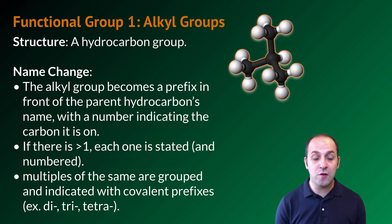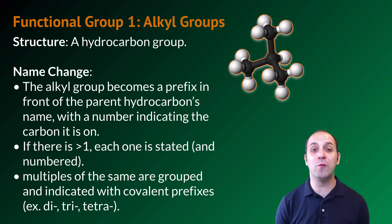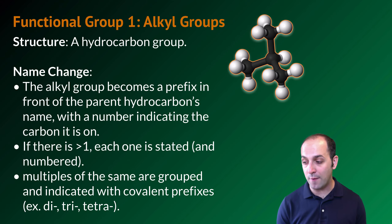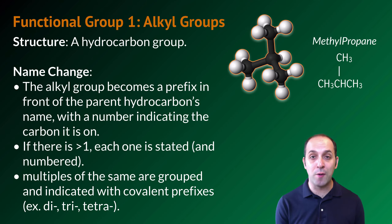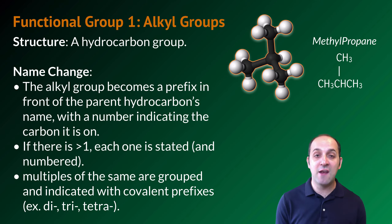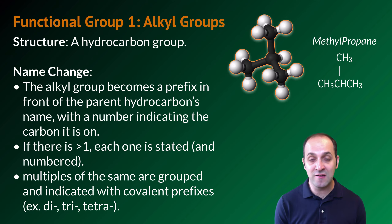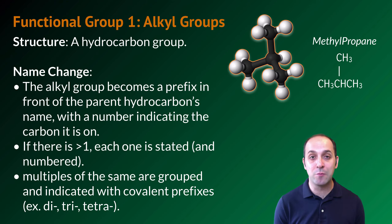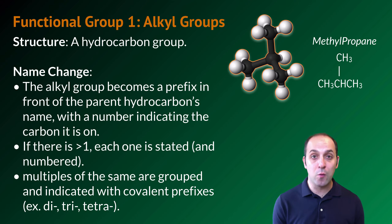So if we had two methyl groups, we'd call it dimethyl. If we had three butyl groups, we'd call it tributyl, and so on. Coming back to this example which we've seen before, this is methylpropane because we've removed a hydrogen from the second carbon and put a methyl group — a one-carbon alkyl group — in its place. We don't have to number this here because this is the only possible location where we could put that methyl group. If we put it onto the number one carbon, we would simply make a molecule of butane.